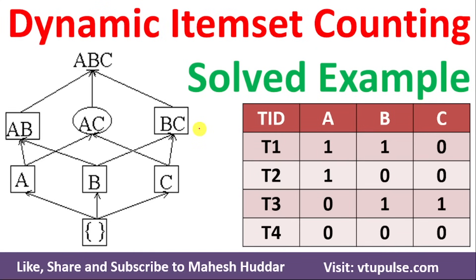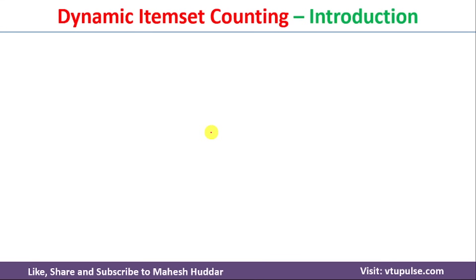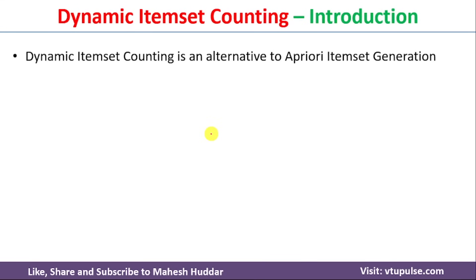Welcome back. In this video, I will discuss the dynamic item set counting algorithm with a simple solved example. Dynamic item set counting is an alternative to a priori item set generation. I have already discussed how to apply the a priori item set generation algorithm in association rule mining. The link for that video is given in the description below.